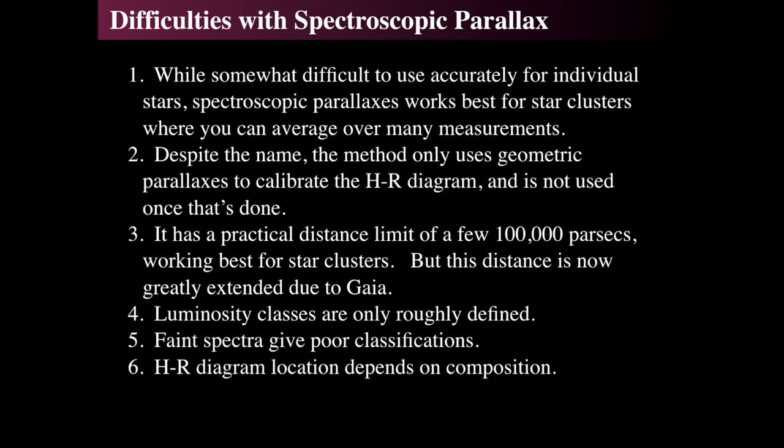The luminosity classes are roughly defined, which makes it trickier, because you're talking about widths of lines. As you can see from the HR diagrams shown, once you put a huge number of stars out there, the luminosity classes start to blend together. And if you have faint spectra, it's really hard to tell the main sequence star from a giant — it actually gets very difficult if the spectra are very, very faint.